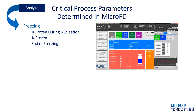Things that you can see using this technology that you can't see in other systems: we can tell you how much the product is frozen, how much is frozen during nucleation. We can see the end of freezing — essentially when the product has become stable and you can move on to primary drying. So no longer do you have to wait for a time-based event.